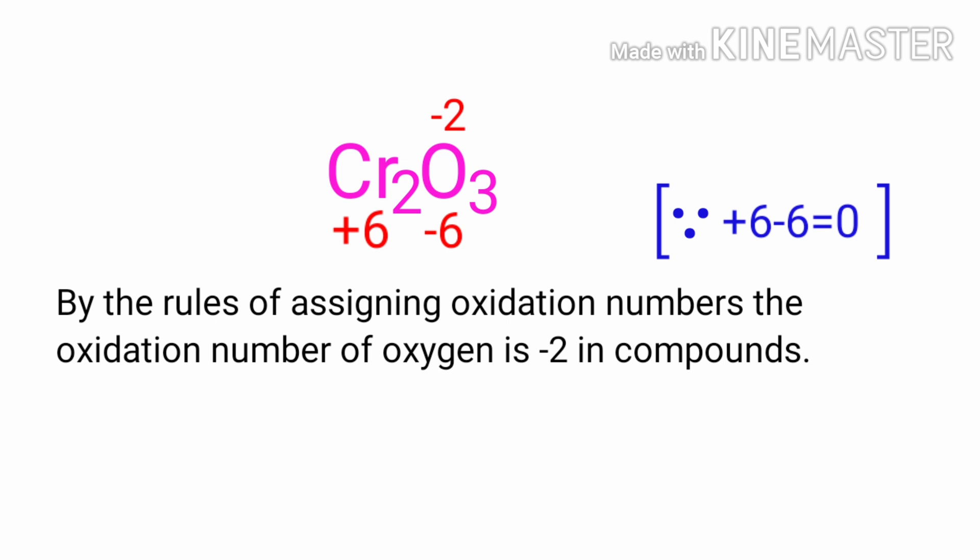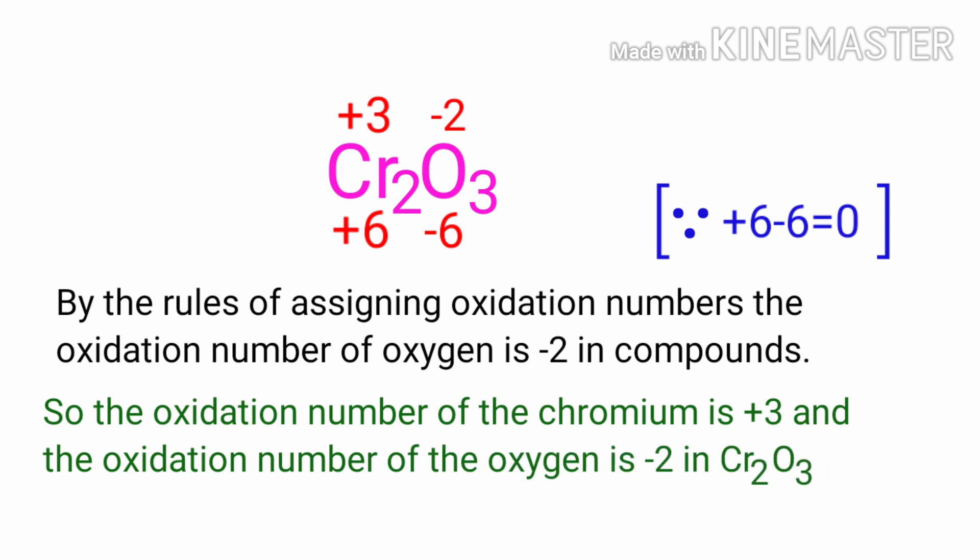There are two chromium atoms. So we can write the oxidation number of chromium is plus 3. Therefore, the oxidation number of chromium is plus 3 and the oxidation number of oxygen is minus 2 in chromic oxide.